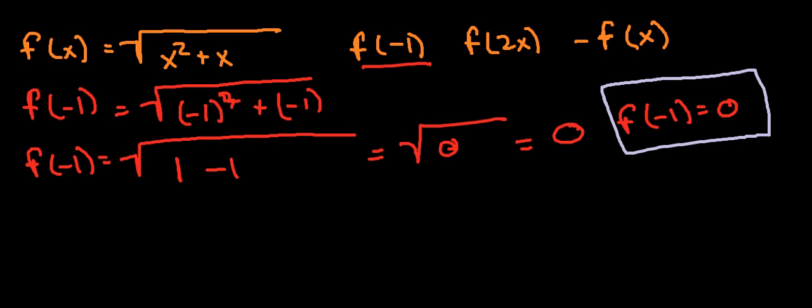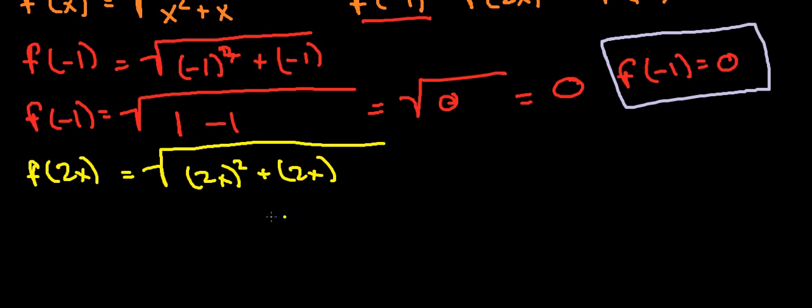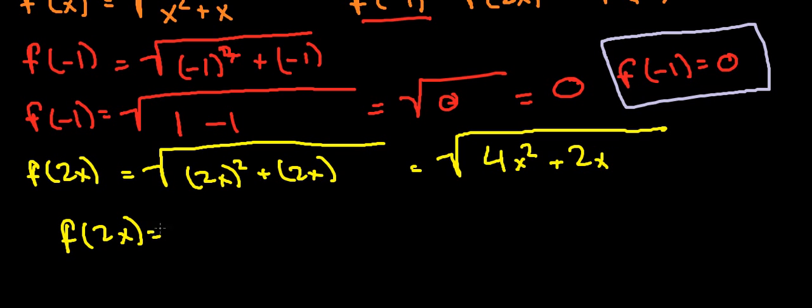Next, we'll do f of 2x. So I have f of 2x is equal to the square root of 2x squared plus 2x. We do 2x squared, which is, so this is going to be equal to the square root of 4x squared. Remember, this 2 is inside. This 2 is being plugged into the x, so the 2 has to be squared as well. People might make the mistake of just squaring the x, but since both 2 and x are being plugged in here, both of them are being squared. So we're going to get 4x squared plus 2x. So our f of 2x is equal to the square root of 4x squared plus 2x.